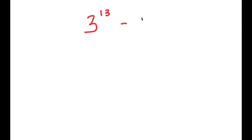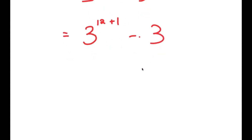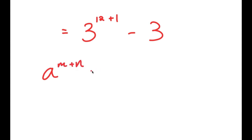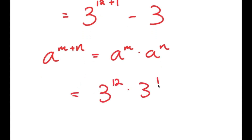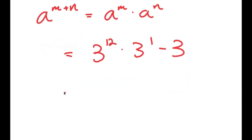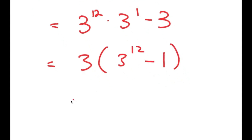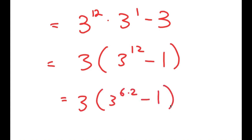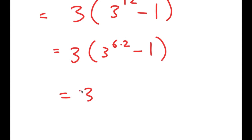In this video, I'm going to solve the problem 3 to the power of 13 minus 3. I'm going to start by rewriting this as 3 to the power of 12 plus 1 minus 3. Using the property a to the power of m plus n equals a^m times a^n, I get 3 to the power of 12 times 3 to the power of 1 minus 3. From here, I can factor out 3, giving 3 times 3 to the power of 12 minus 1. Then I rewrite 3^12 as 3 to the power of 6 squared.